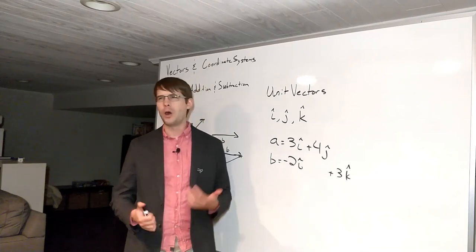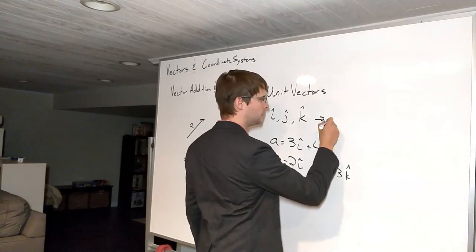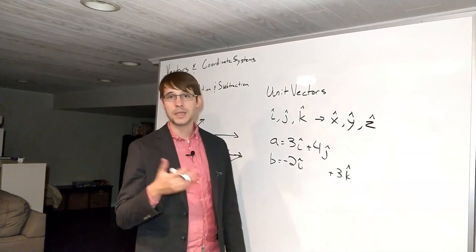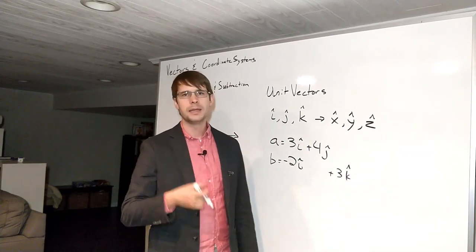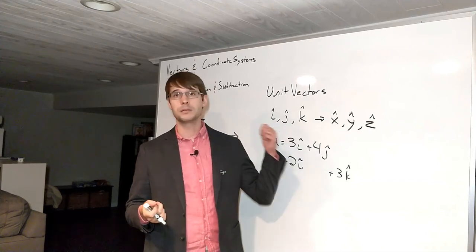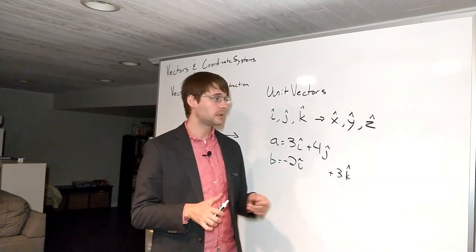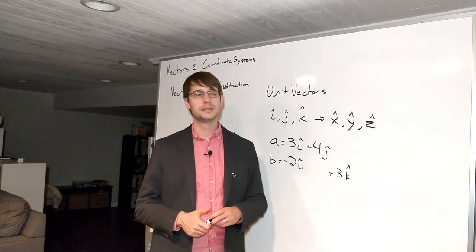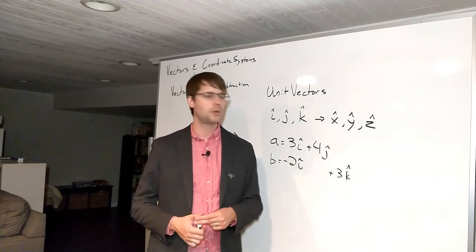I will also often use instead of I, J, and K X hat, Y hat, Z hat because these then you don't have to remember which ones correspond with what. It also lets you do the same within Cartesian coordinates. You can have an R hat and a theta hat or it also lets you do the same thing in your polar coordinates. So you can have an R hat and a theta hat and that's sometimes useful.